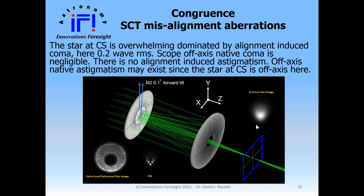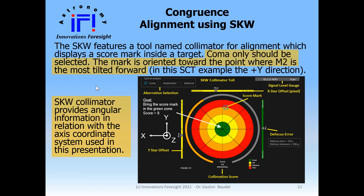This is the star at best focus under seeing-limited conditions, and here you see the point spread function as it would appear in space with no seeing. The defocus star used by SkyWave for analysis is extra-focal, where the central obstruction and diffraction rings are visibly offset. SkyWave features a tool called the Collimator for alignment, which displays a score mark inside a target. The mark is oriented toward the point where M2 is most tilted forward — here shown at the top of the target, on the positive Y-axis side of our coordinate system, consistent with the M2 tilt applied.